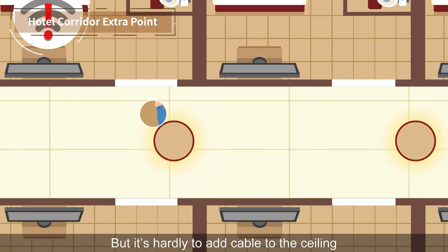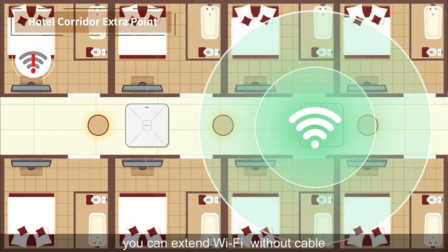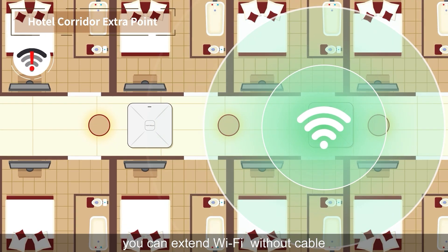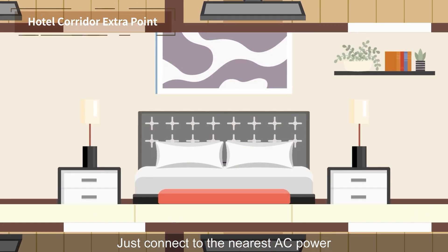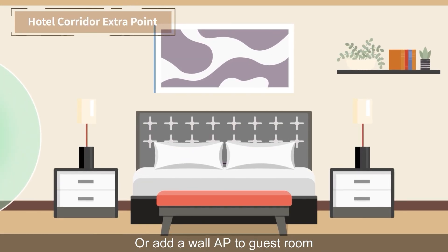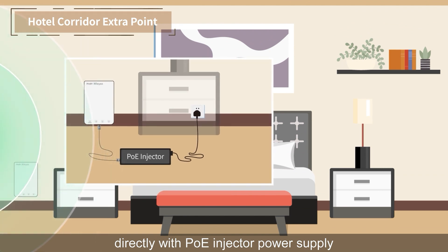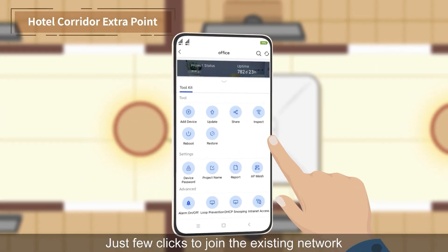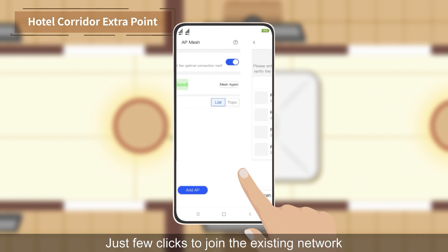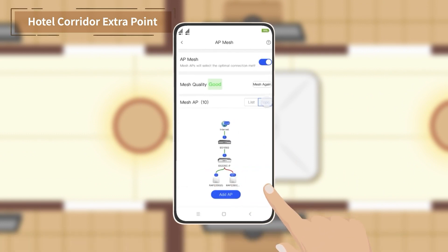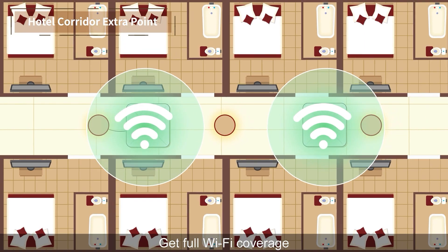Now with Ray-E Mesh, you can extend Wi-Fi without cable — just connect to the nearest AC power, or add a wall AP to the guest room directly with a PoE injector power supply. Just a few clicks to join the existing network and get full Wi-Fi coverage.